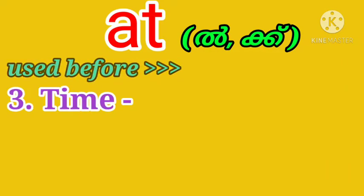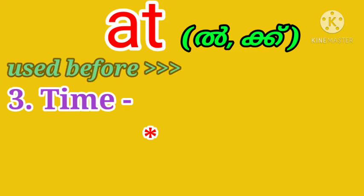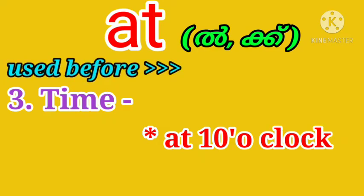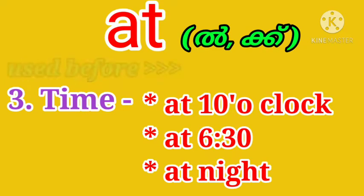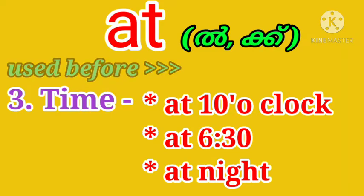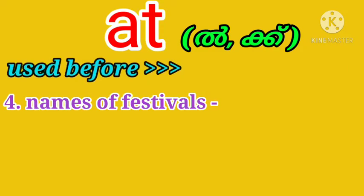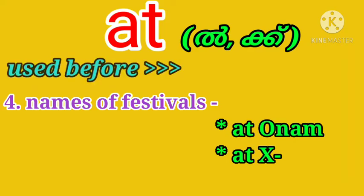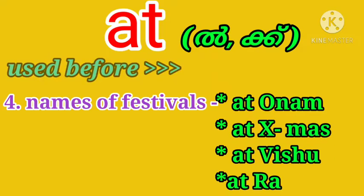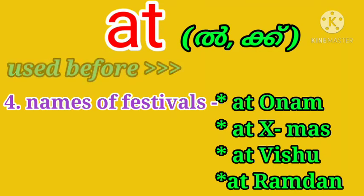'At' is commonly used before a point of time. For example: at 10 o'clock, at 6.30, at night. It is also used before the names of festivals — for example, at Onam, at Christmas, at Vishu, at Ramadan.